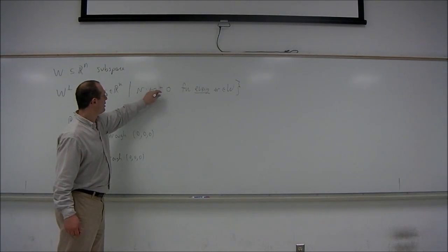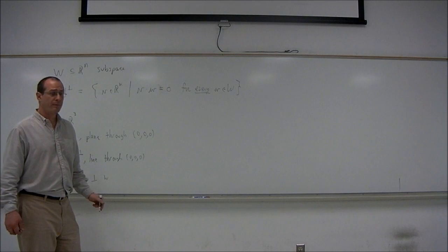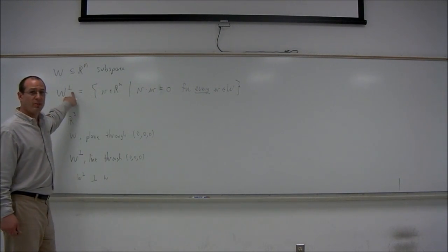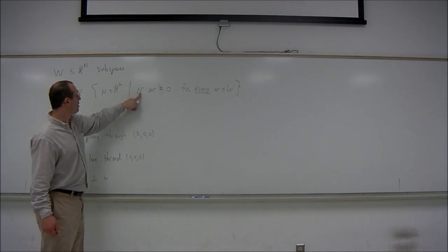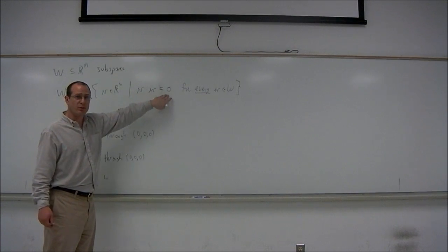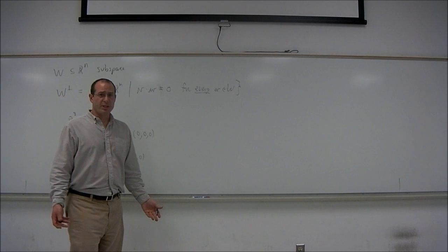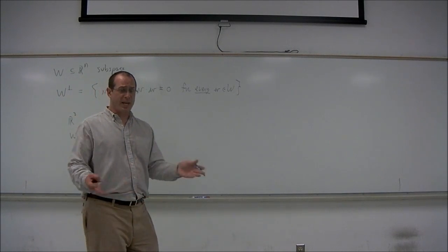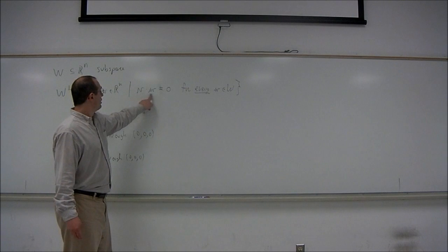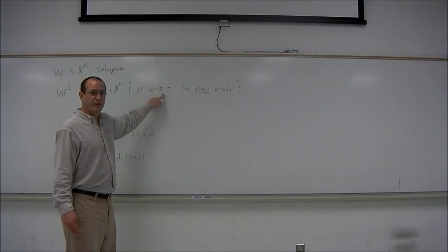The word orthogonal here is slightly better than the word perpendicular, because the zero vector will be in W perp. Zero dot any vector will equal zero. So it wouldn't be geometrically appropriate to say that the zero vector was perpendicular to anything. We use the word orthogonal to include the zero vector.